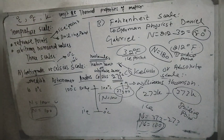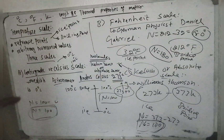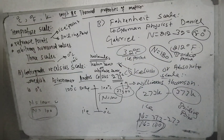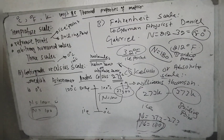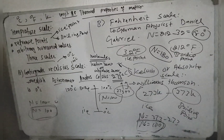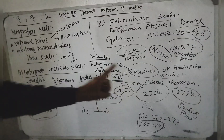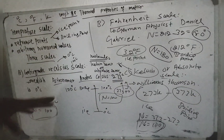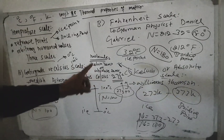Absolute zero temperature is the point at which the molecules are completely at rest. The temperature at absolute zero is approximately minus 273 degrees Centigrade. This is the lowest possible temperature in the universe.